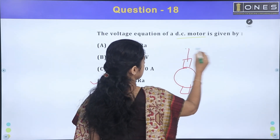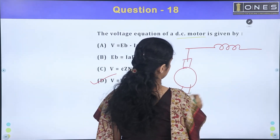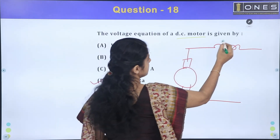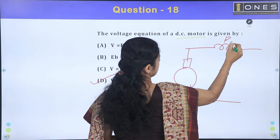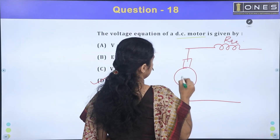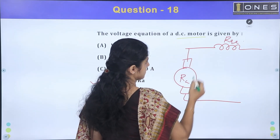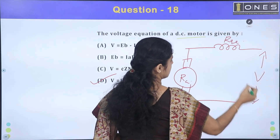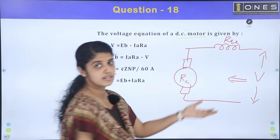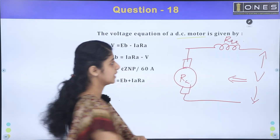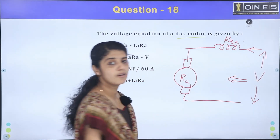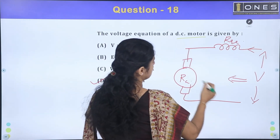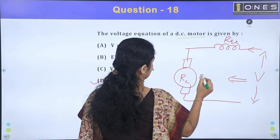We have a DC machine — a series machine. This is our armature, then the series field. R is seen in the series field. The armature resistance is given. The motor is given by the supply voltage. The current flow is inverted in the motor. The equation is given by the back EMF.